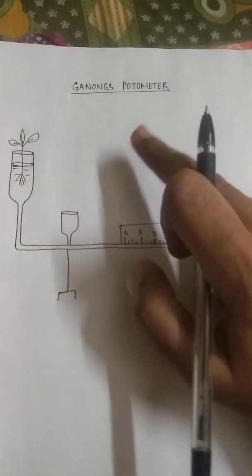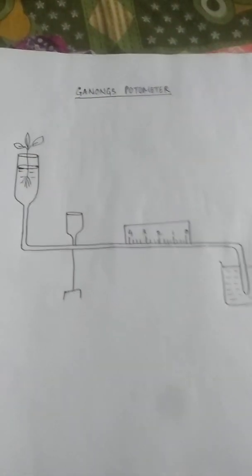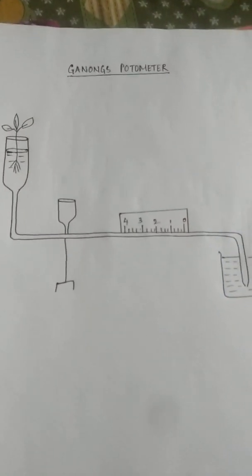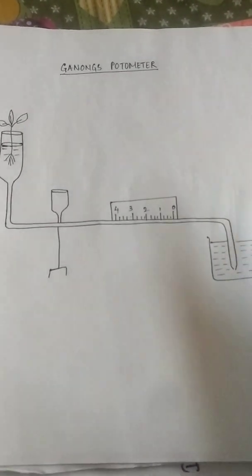Now this instrument which is Ganong's potometer is very much used in biology labs to find out the transpiration rate of a plant.